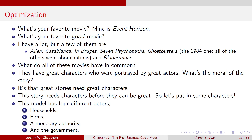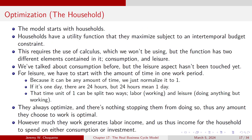This model is a little different from Casablanca. We're going to have four different actors: households, firms, a monetary authority, and the government. The model starts with the households — they maximize their utility. This requires calculus, which we won't be using much in this course right now.